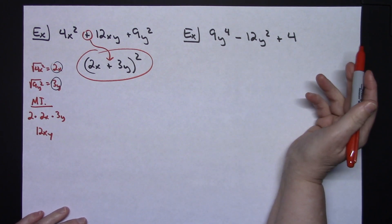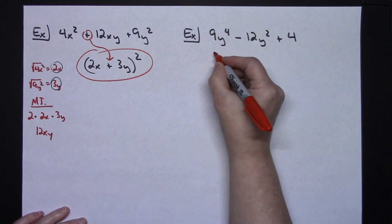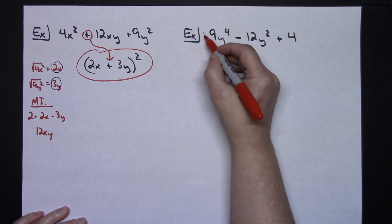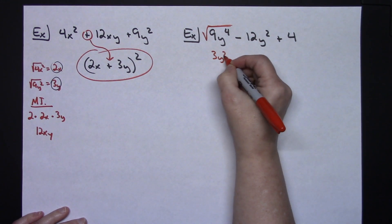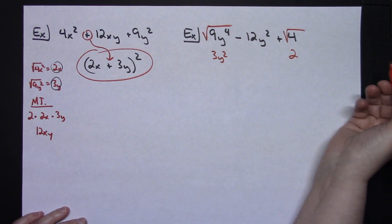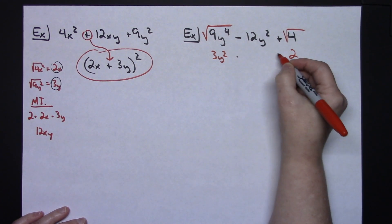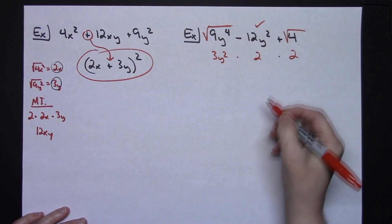Now on this one, let's see if we can do a little bit more of this in our head here. Is this a perfect square trinomial? It is. If I take the square root there, I would have a 3y². If I take the square root here, I would have a 2. If I multiplied both of those by 2, that's going to give me a 12 and a y², the middle term checks.